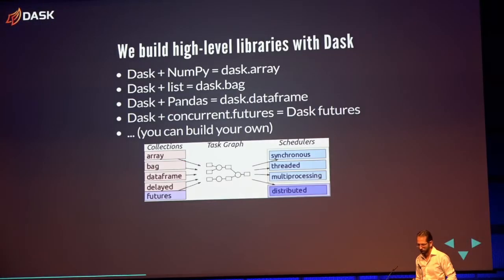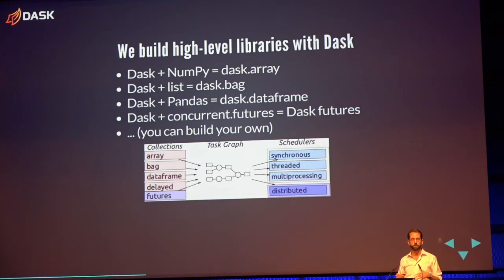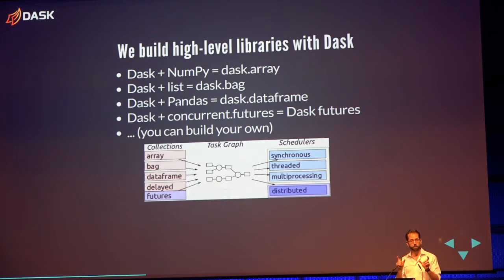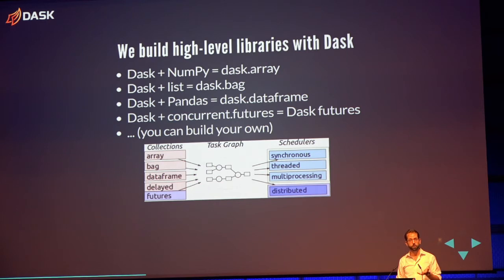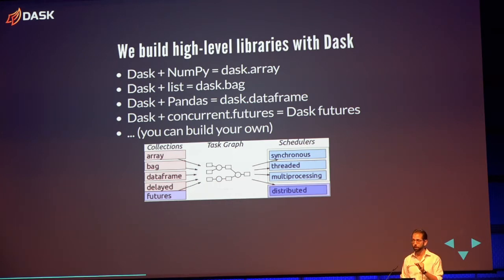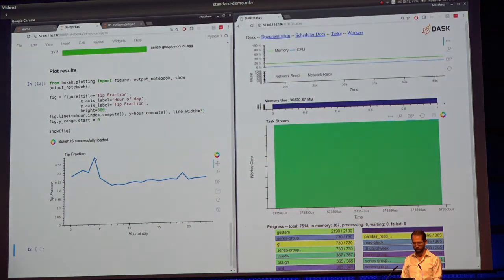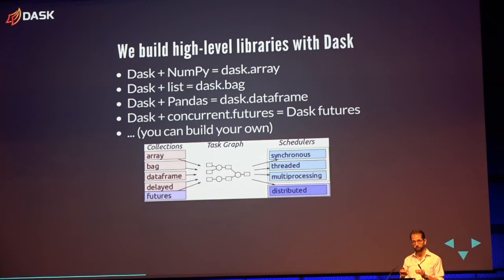On top of projects like that, we've built higher-level libraries that mimic things like NumPy, pandas, or scikit-learn so you don't have to write those for loops. Projects like dask.delayed give the ability to parallelize many products in the numeric Python ecosystem. We've coupled Dask with NumPy to create Dask Array, with Python lists to make something like Spark RDDs, Dask with pandas to create Dask DataFrame, and a concurrent futures interface. Many companies using Dask use the lower-level task scheduler pieces to build their own systems specific to what they do.